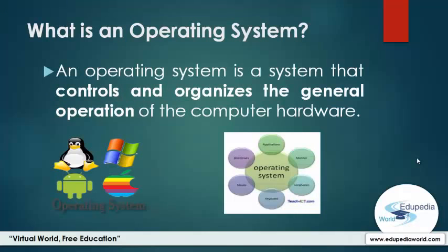What is an operating system? That is the first thing we need to know. You should be able to give the definition of operating systems. We define an operating system as a system that controls and organizes the general operation of the computer hardware. It is a software that manages the underlying hardware to make use of the whole machine. Keep in mind this definition.